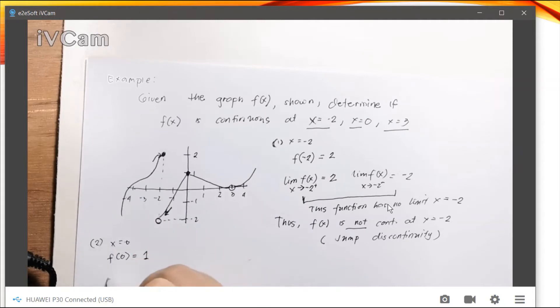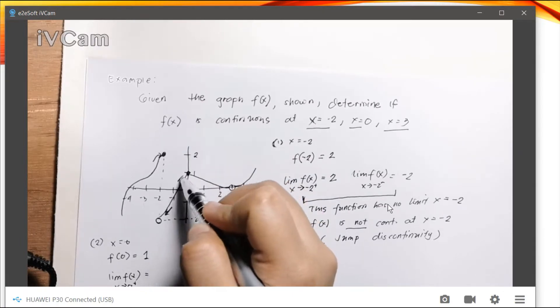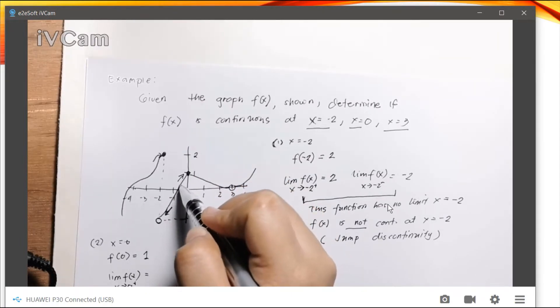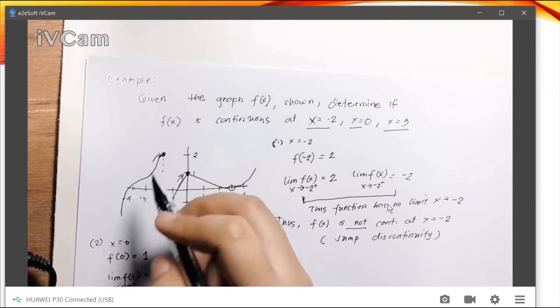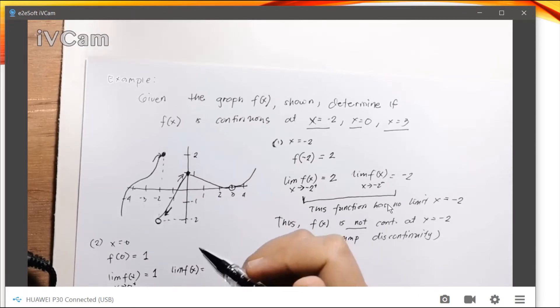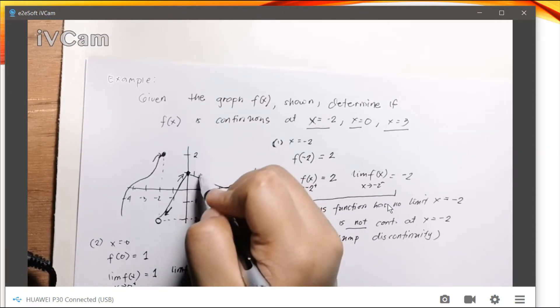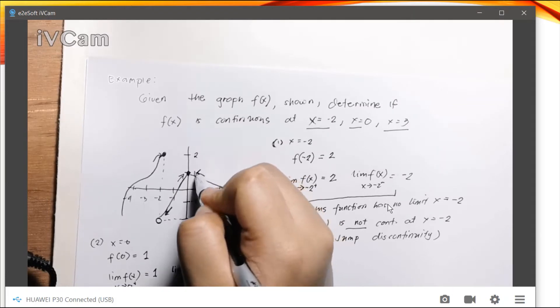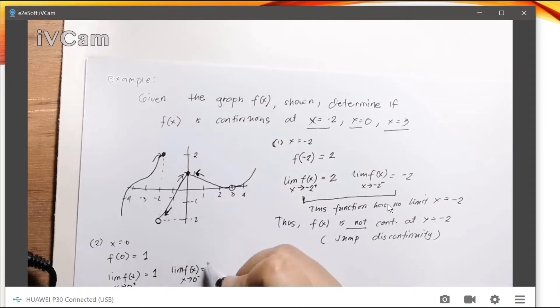Now let's find the limit of the function as our x approaches 0. From the positive direction, that is from right to left, we see that as our x approaches 0, our y equals 1.